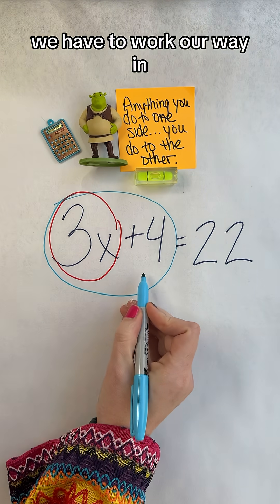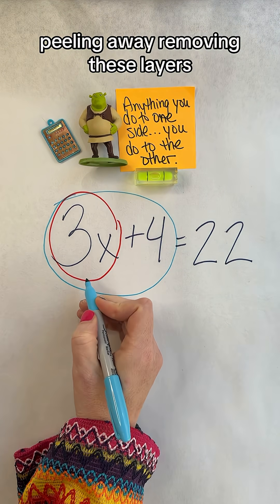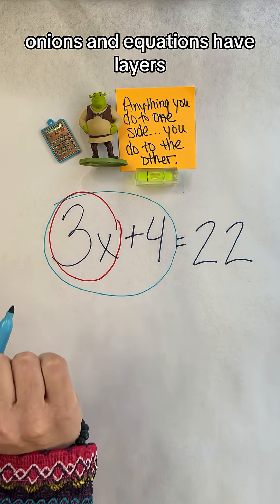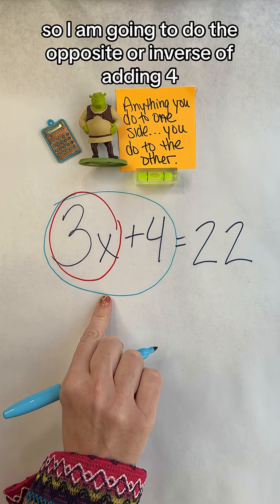We are going to start at the outer layer. We have to work our way in, peeling away, removing these layers, because remember: ogres, onions, and equations have layers.